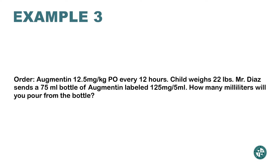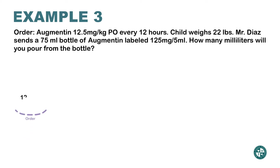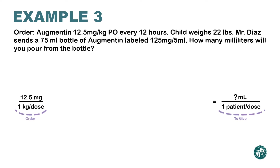What is the order? 12.5 milligram per kilogram — so for one dose I need to give 12.5 milligram for every kilogram of the dog's weight. The next thing is where do I want to go: how many milliliters am I going to give the patient one time? I'm using the guiding questions to set up the dimensional analysis.